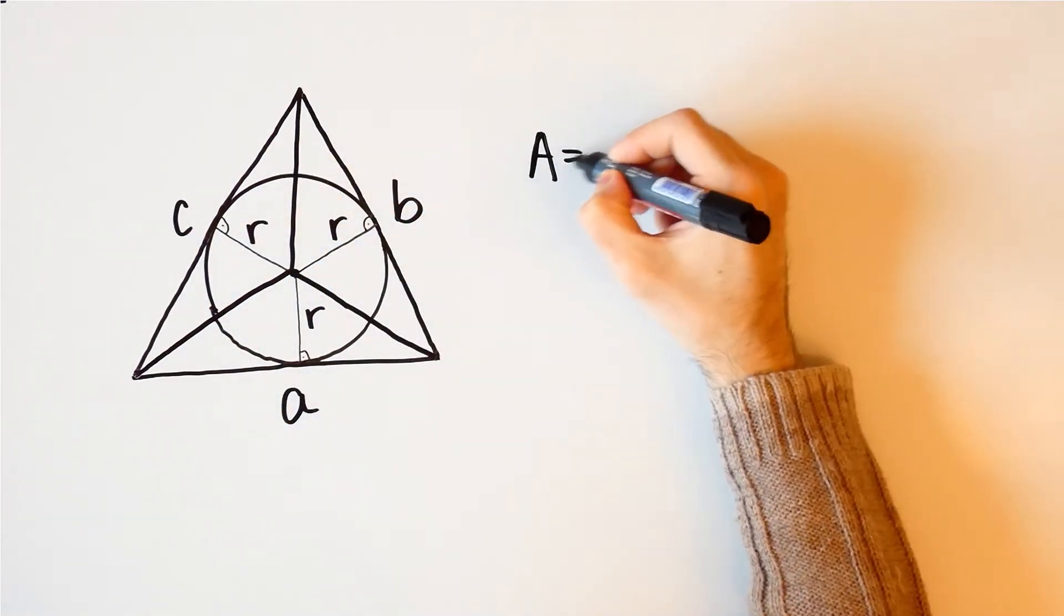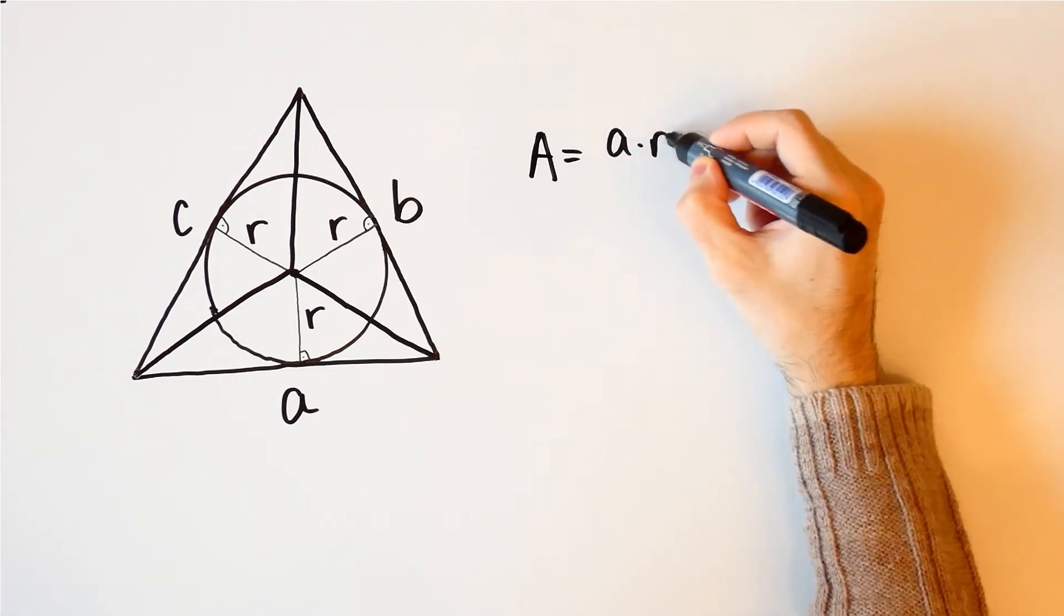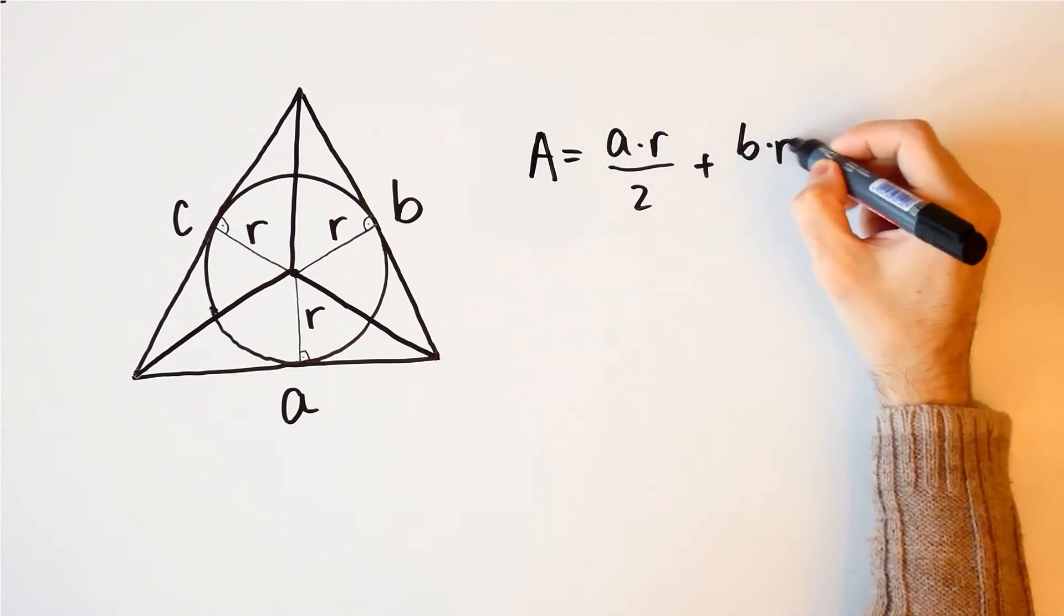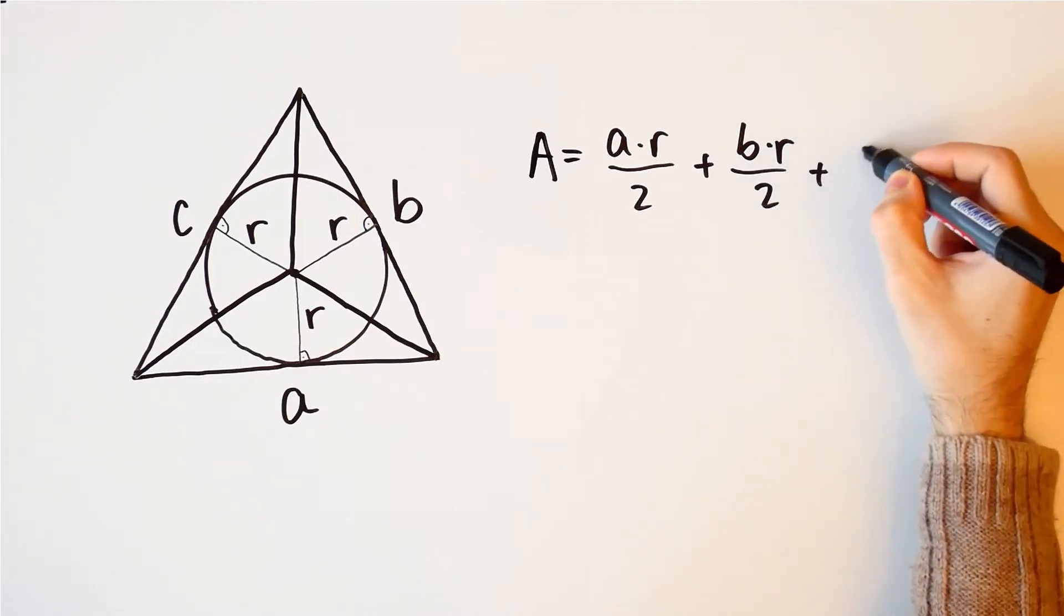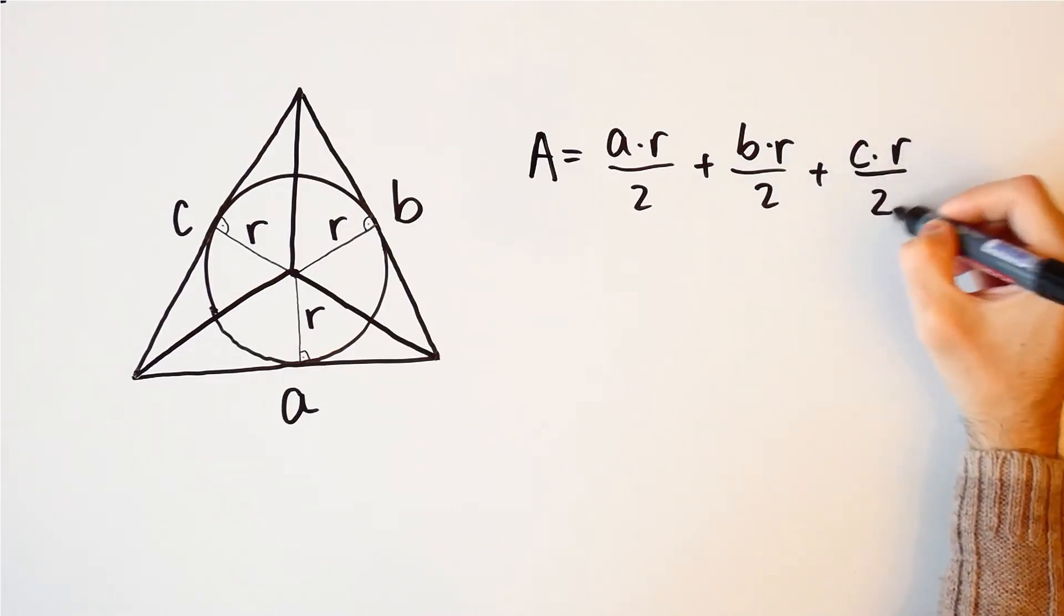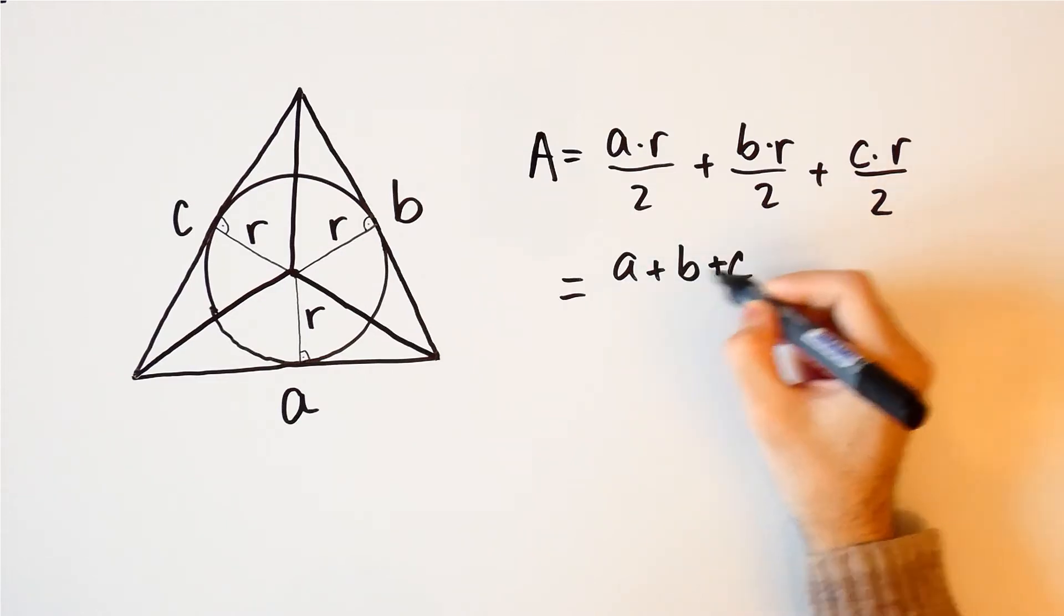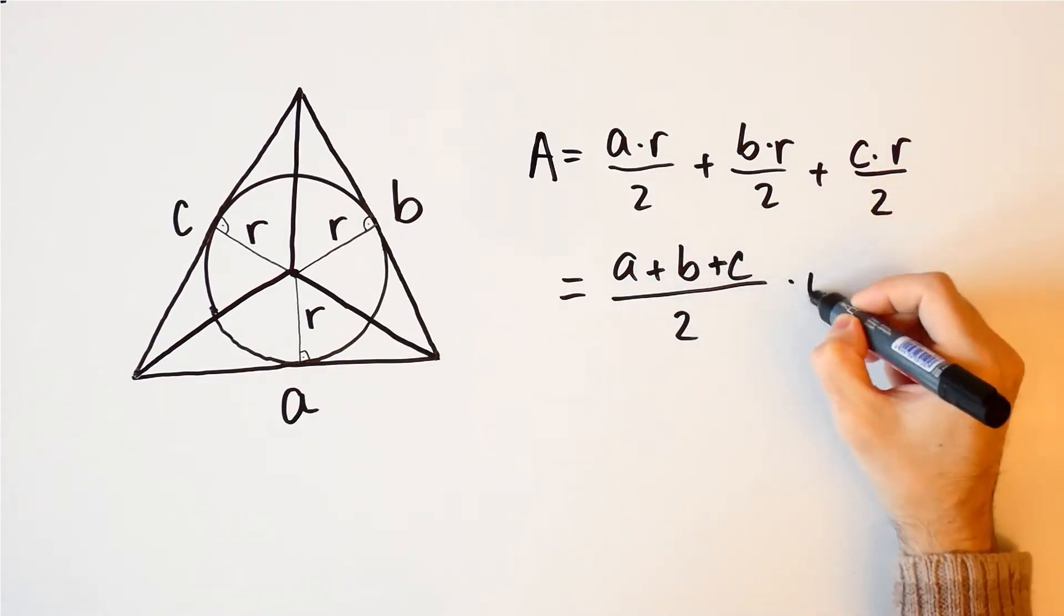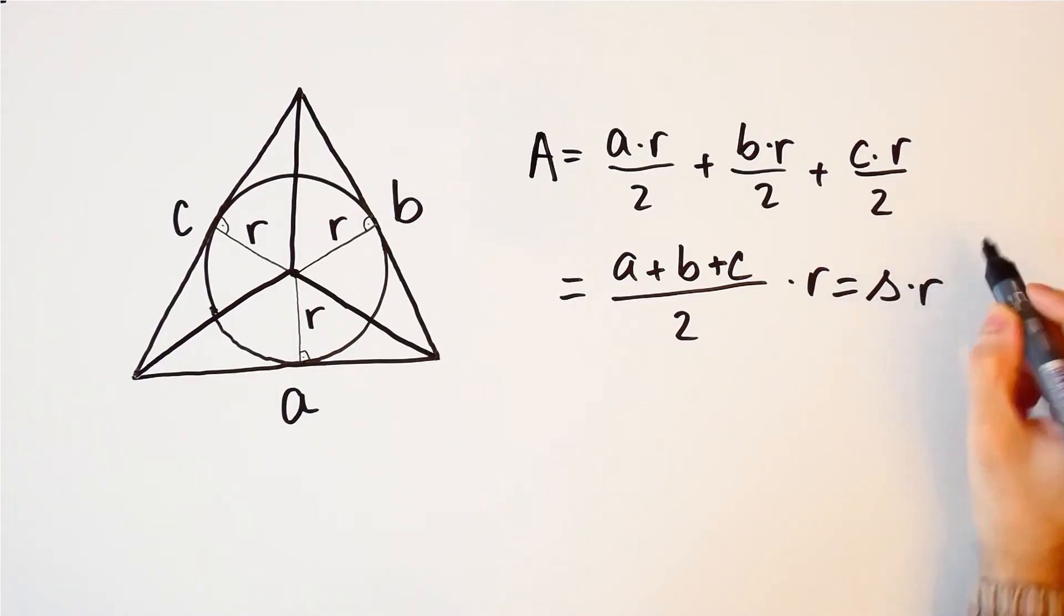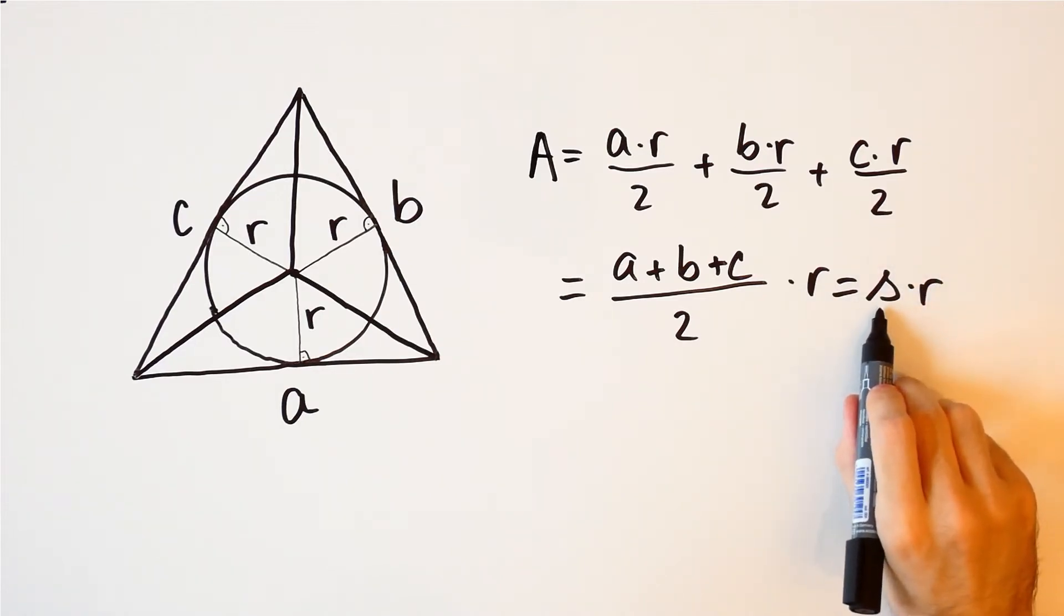The total area is equal to a times r over 2 plus b times r over 2 plus c times r over 2, which is equal to a plus b plus c over 2 times r and that is equal to s times r, where s is the semi-perimeter.